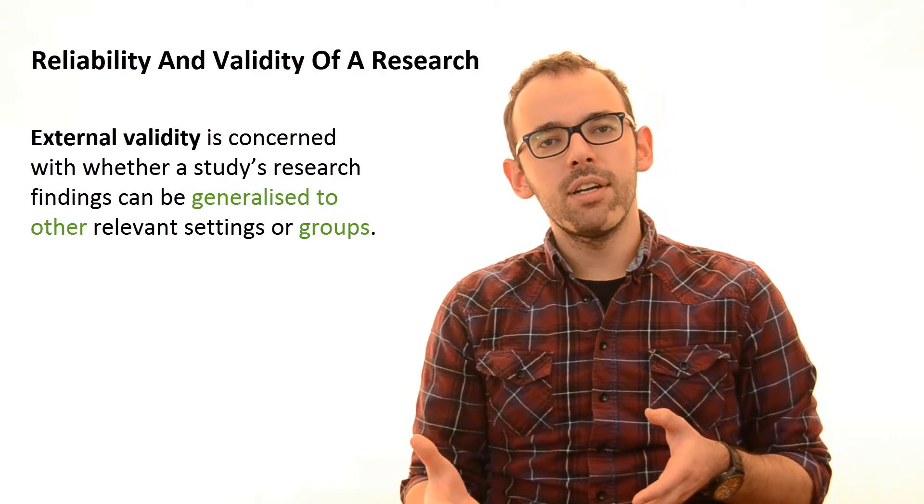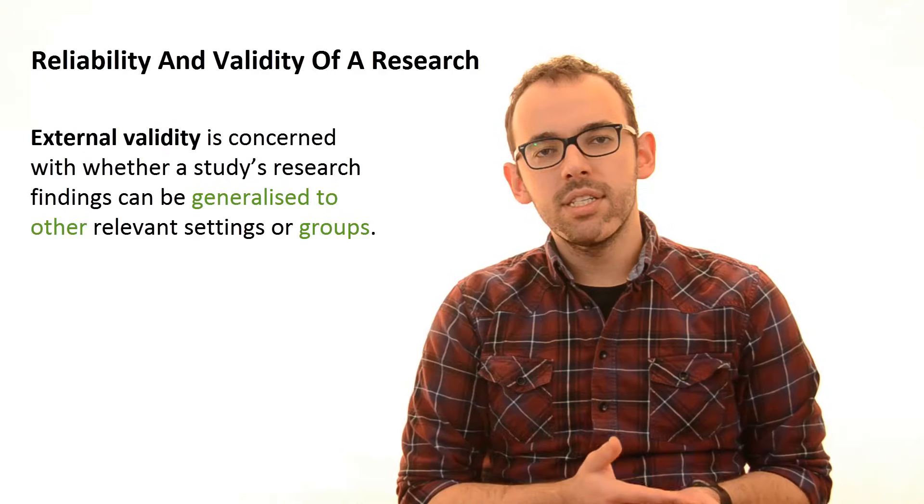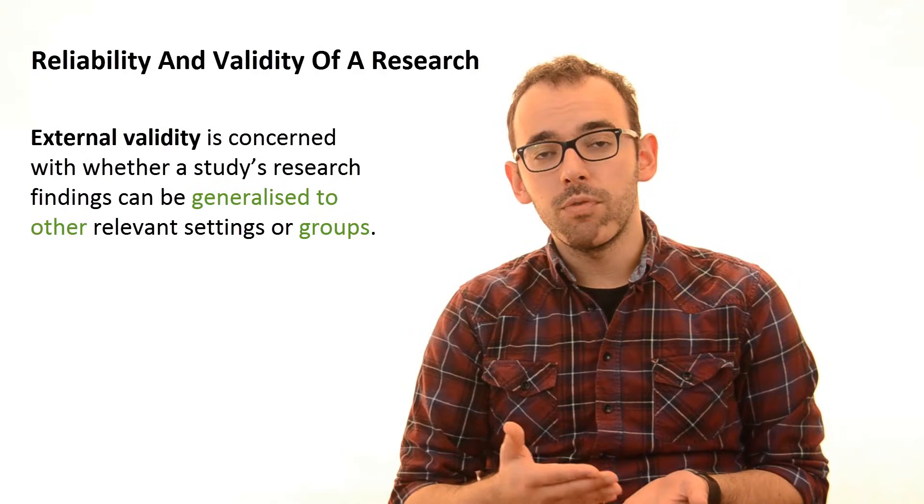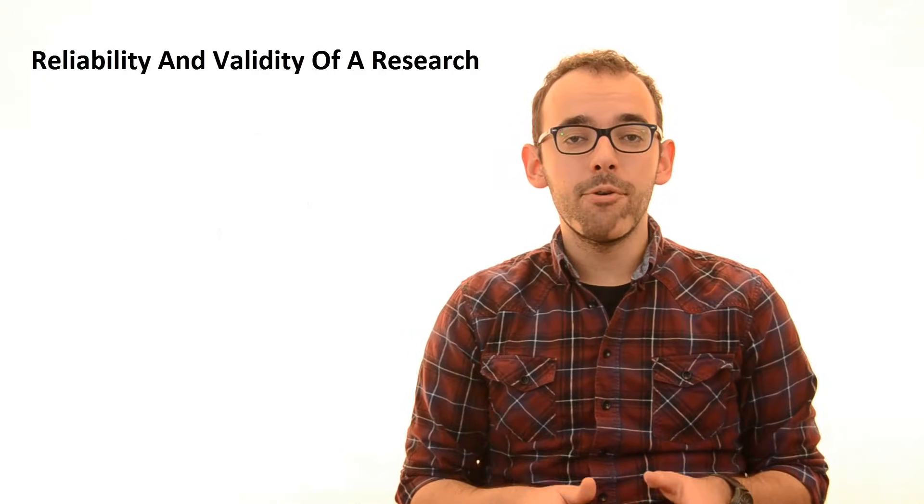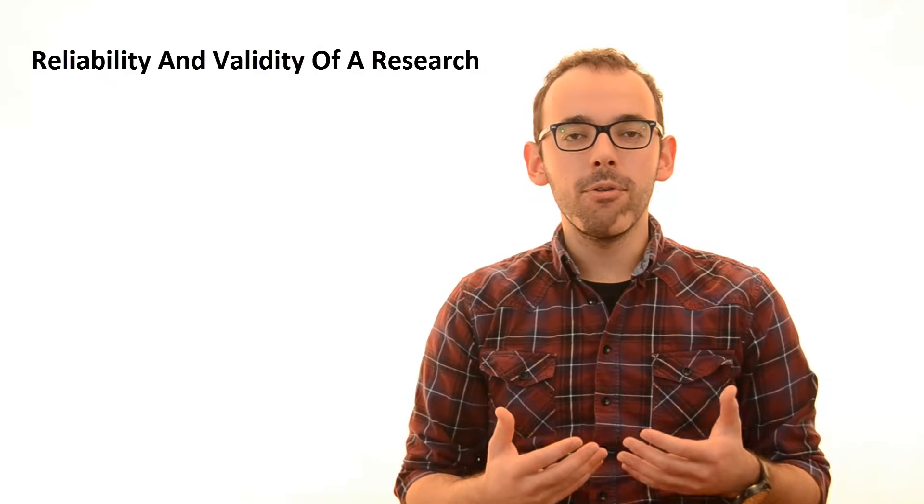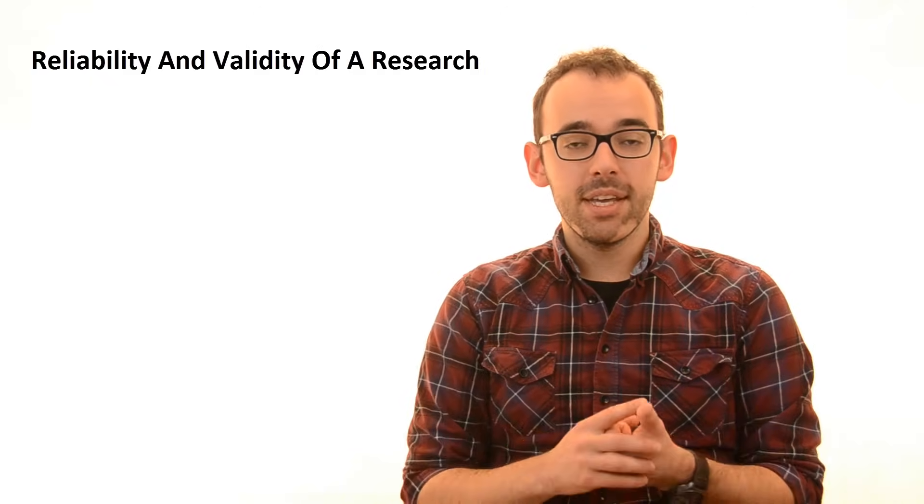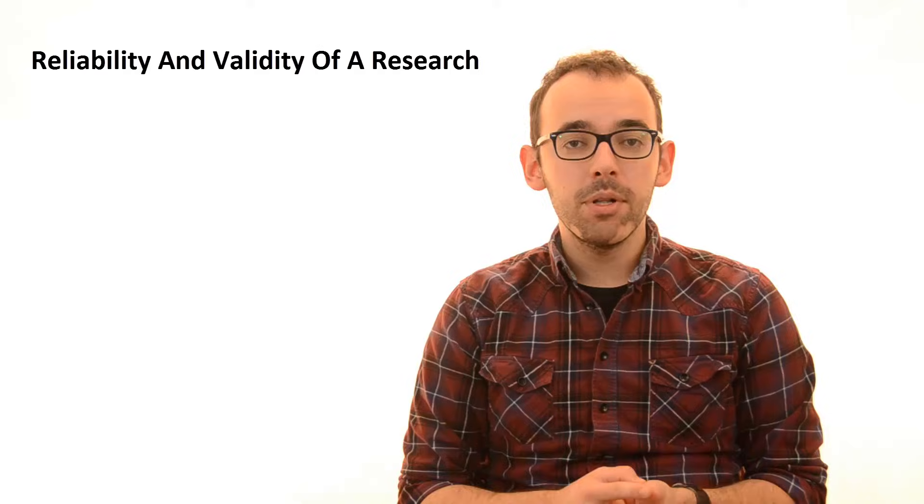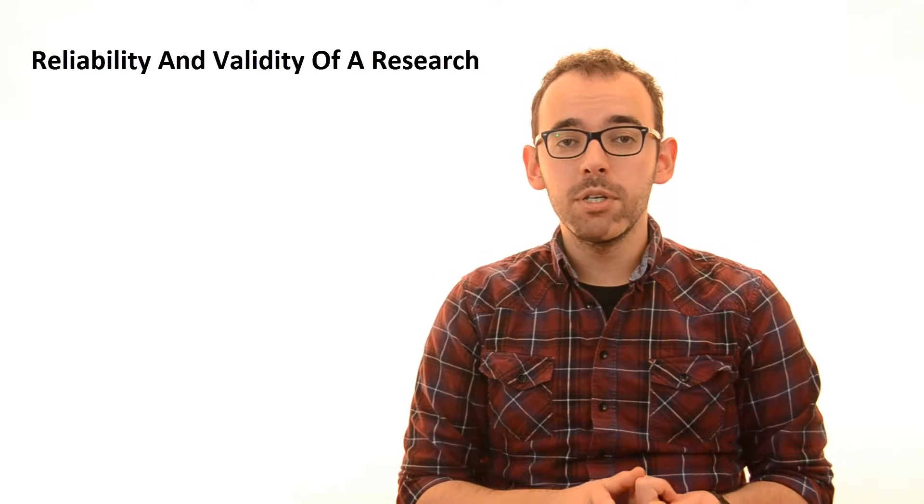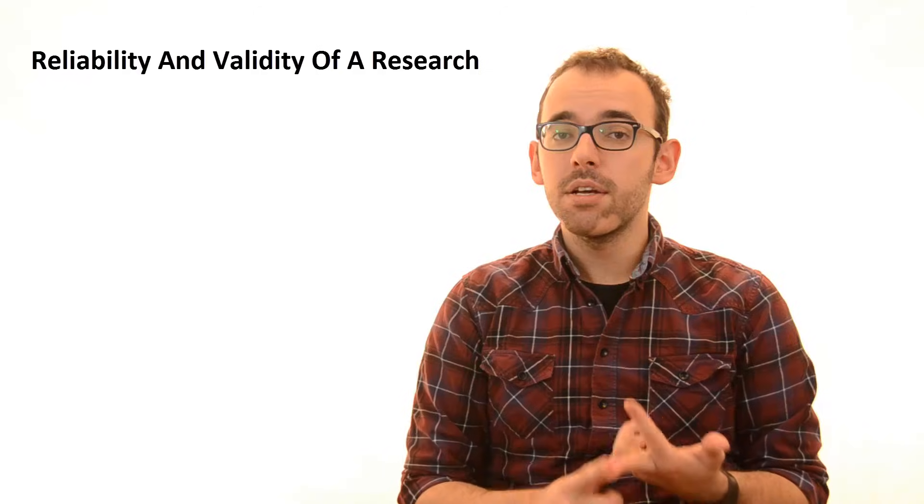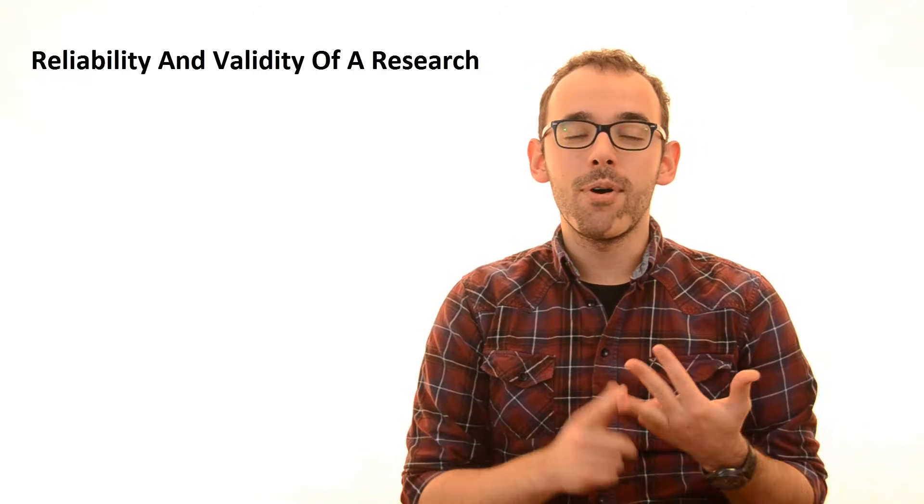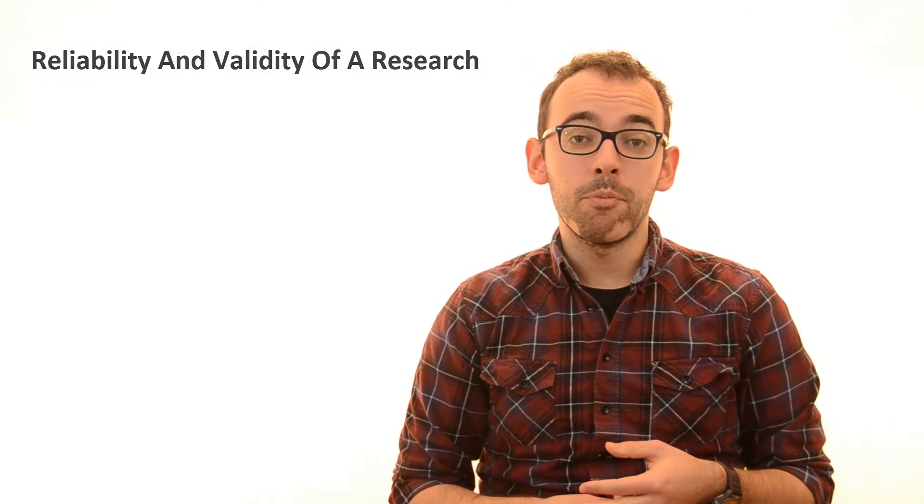So you see, when you are asked about the external validity, you should justify the choice of your sample. And that's all. Now you will have all of these points justified. You will say why your research is reliable, why it is valid from the construct perspective, why is it valid from the internal perspective, and finally, why is it valid from the external perspective.